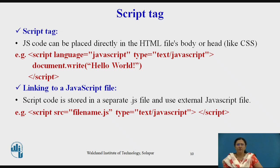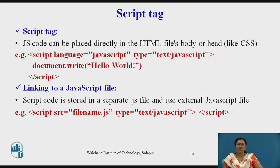We can also link a JavaScript file with a .js extension. With the help of the src attribute on the script tag, we can specify the filename with a .js extension, and accordingly the external JS file will be called inside the HTML.